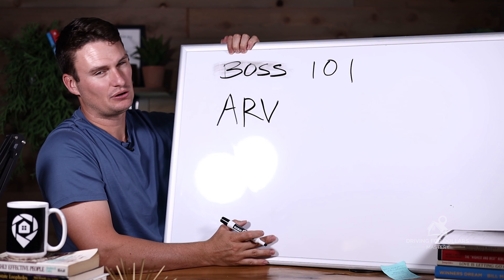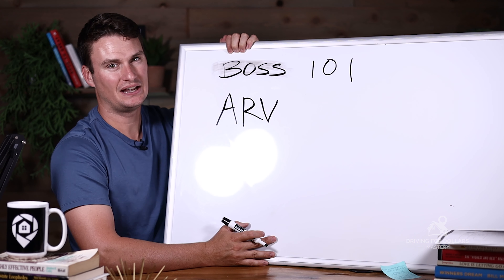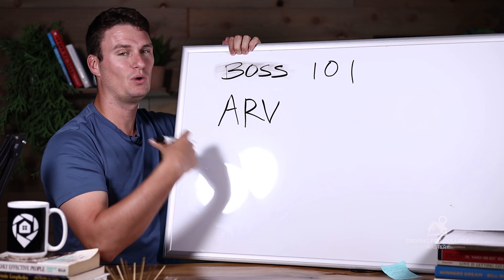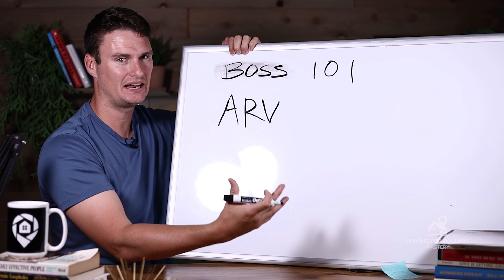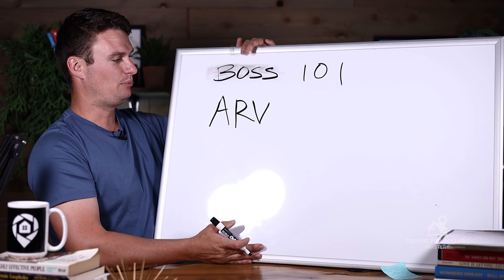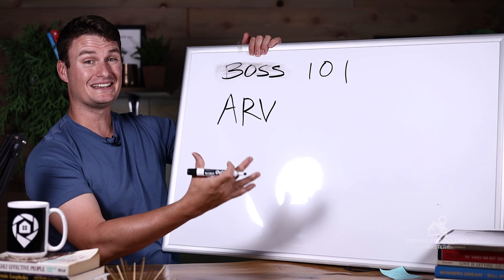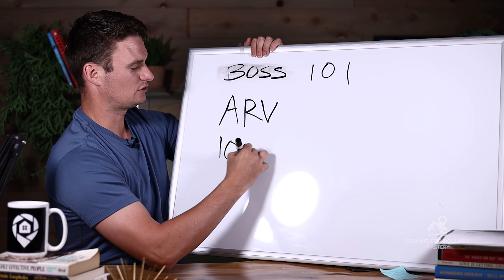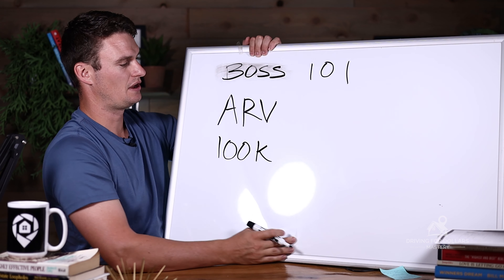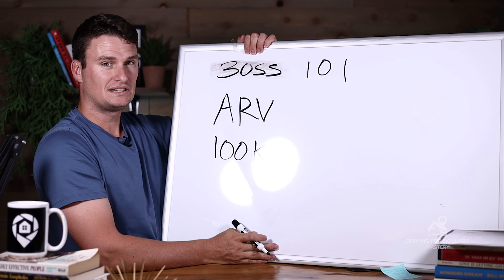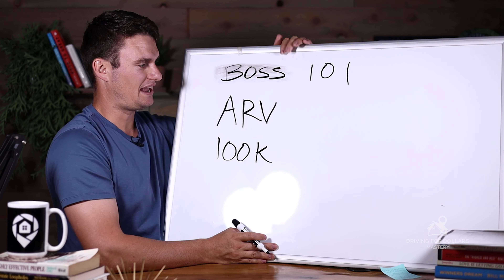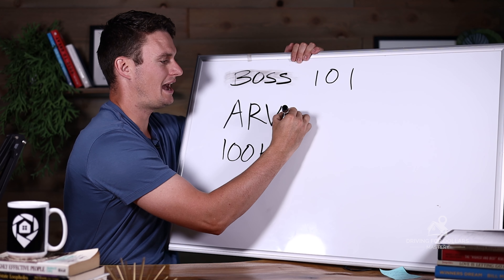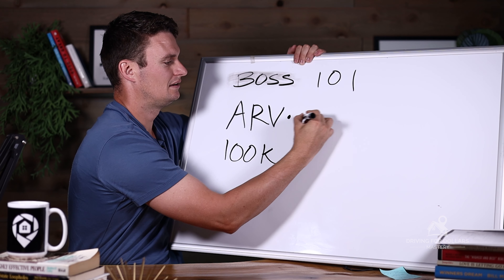You're going to have to calculate what your after repair value is. ARV — after repair value — stands for what the house is worth once it's been fixed up, once the flipper has gone in and done the work. So for example, let's say this house is worth a hundred thousand dollars once it's fixed up — $100k.